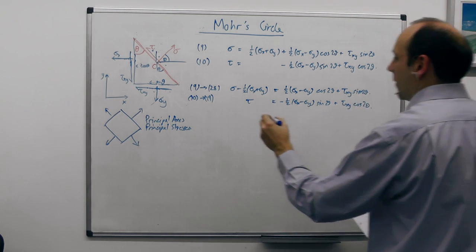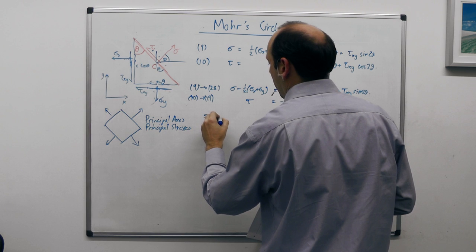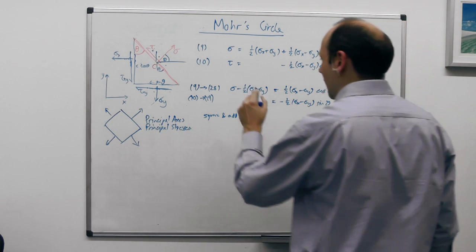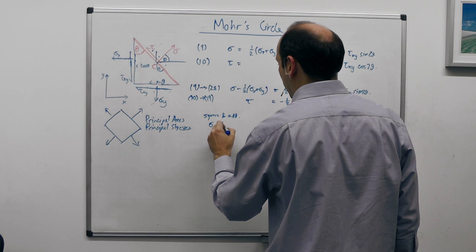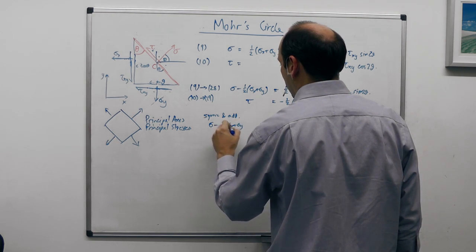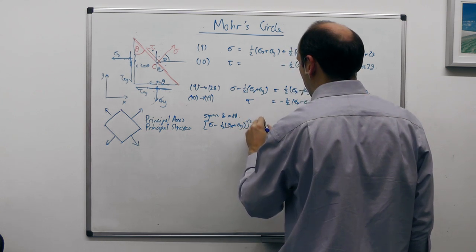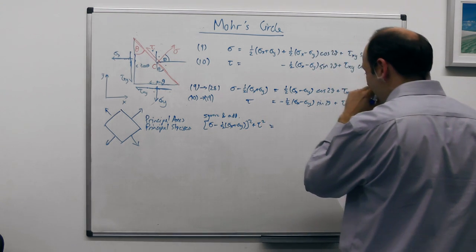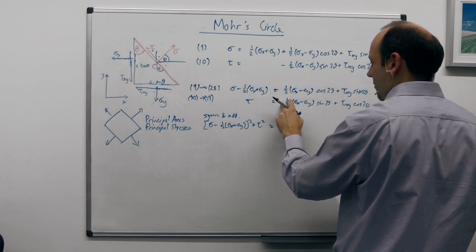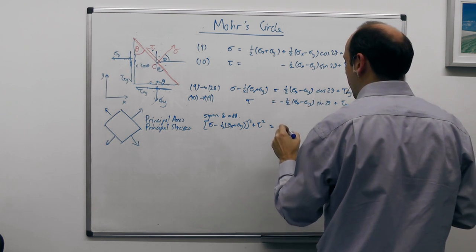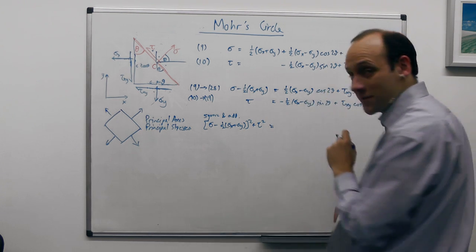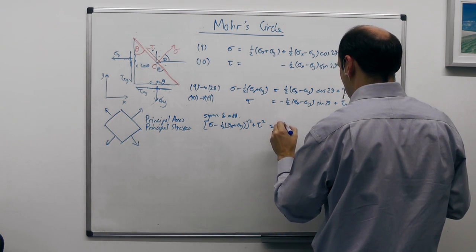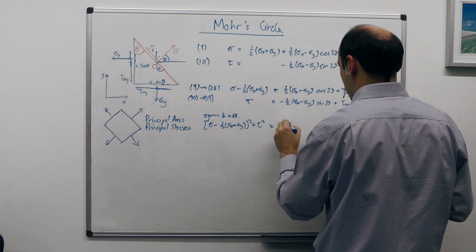Now, if we square those two equations and add them together — this is another bit of mathematical magic. When we square equation 28 and equation 29 and add them, we get (sigma minus a half(sigma_x + sigma_y))² plus τ² on the left. On the right, we get terms with cos²2θ and sin²2θ, and since cos²2θ + sin²2θ = 1, we get a half(sigma_x - sigma_y) all squared.